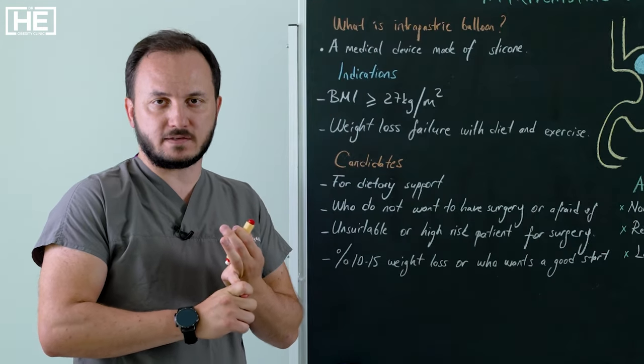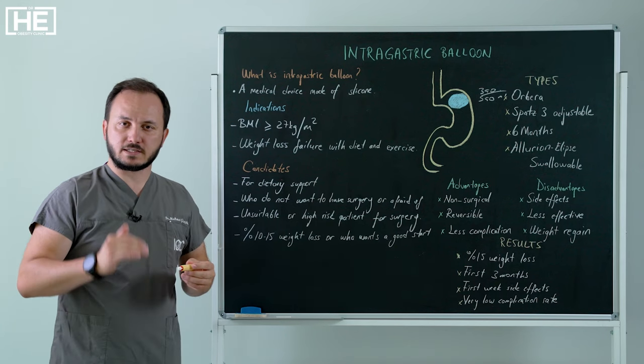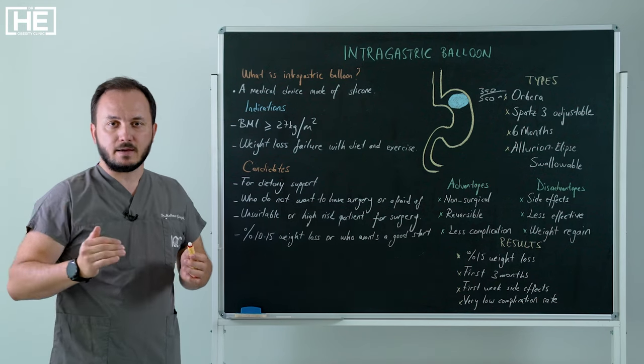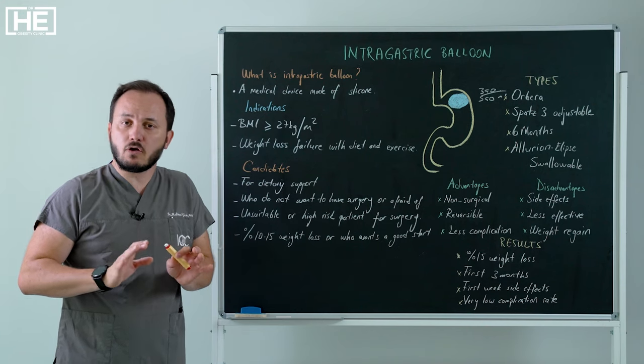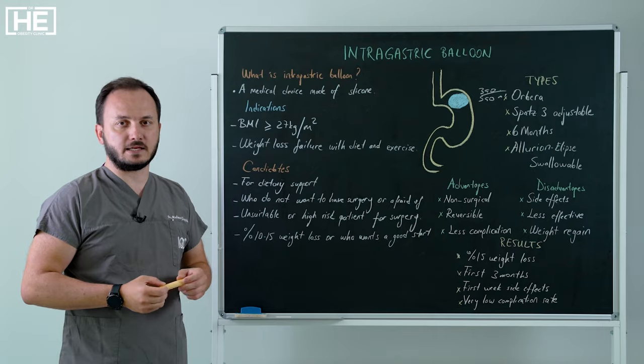So first one for dietary support. Second one, patient is suitable for surgery, it's over 35 BMI, but afraid of surgery or who doesn't want to have surgery. And this is a good candidate also.